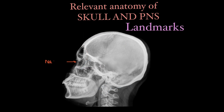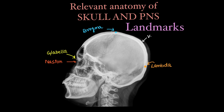We will look at some landmarks helpful in taking the x-rays. At the base of the nasal bone there is nasion. The forward most point on the forehead is the glabella. The point where both coronal sutures meet the sagittal suture is the bregma. The point where both lambdoid sutures meet the sagittal suture is the lambda.